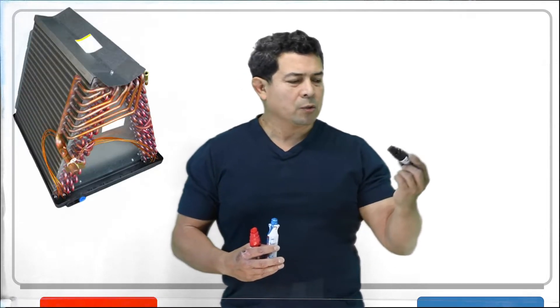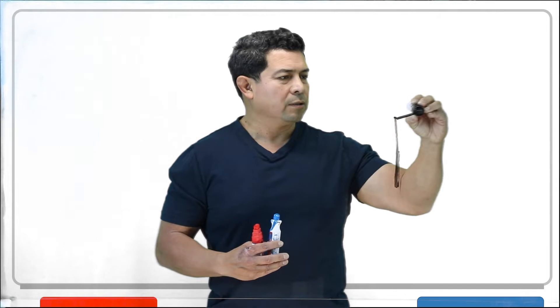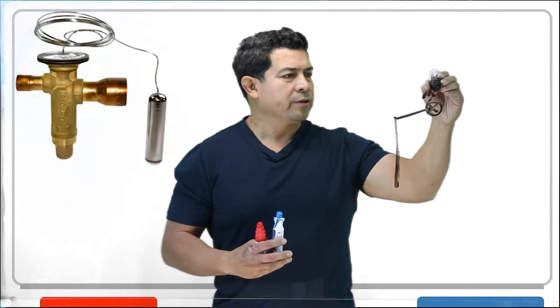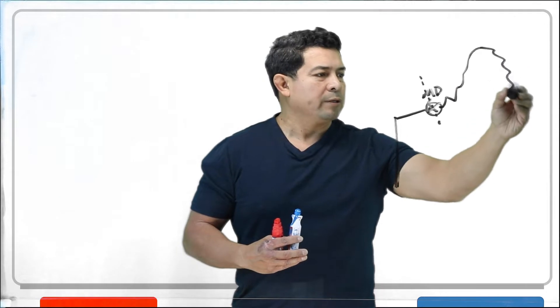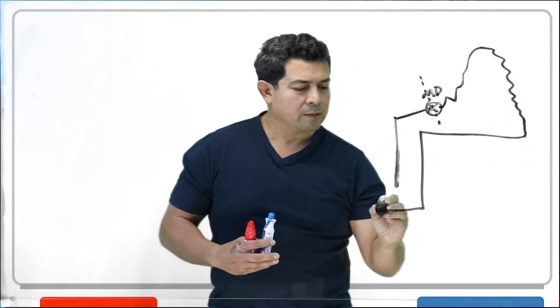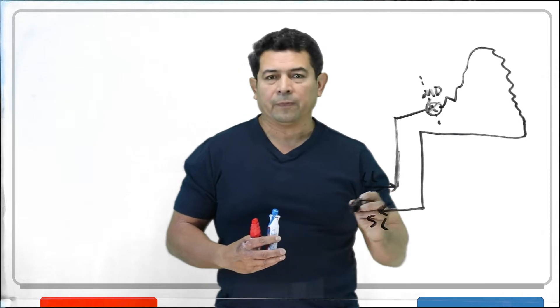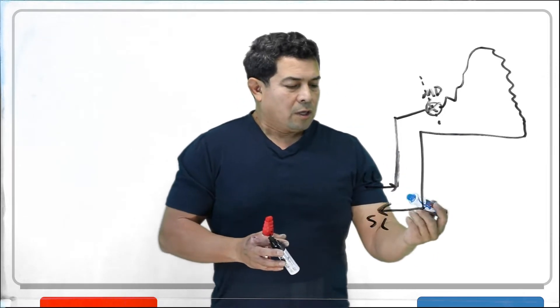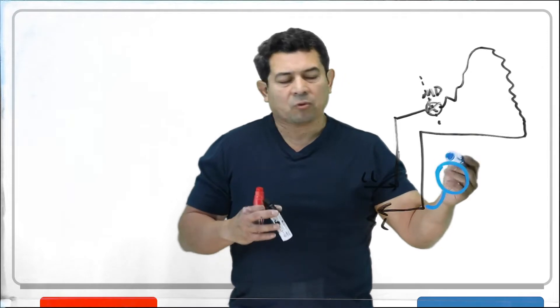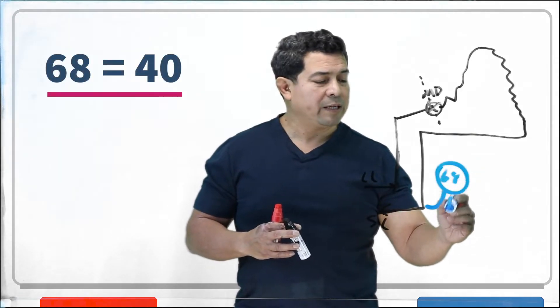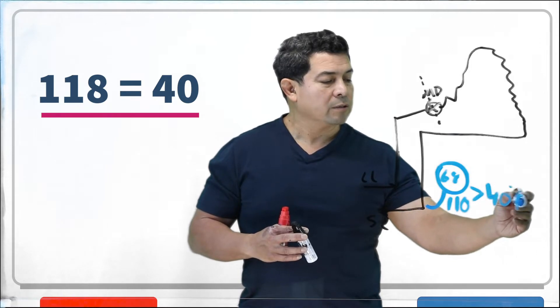When we look at this we see that the liquid line is going to come up and go into the metering device. This metering device creates a pressure drop right here. It goes into the evaporator and then eventually comes out the suction line. If we were to hook up gauges here on my suction line, we would want a pressure that's going to keep it right around - if it's R22, 68 psi; if it was 410A it would keep it at about 118 psig, because both of these would equal 40 degrees Fahrenheit, and that's what we want.